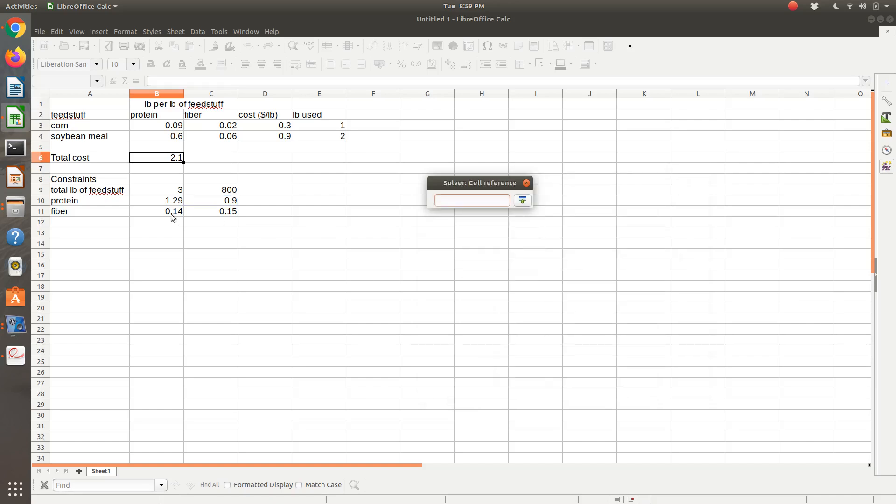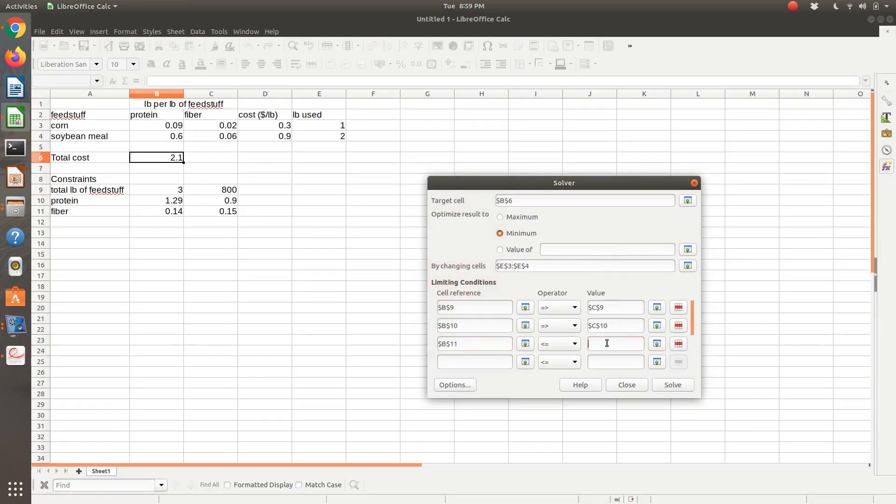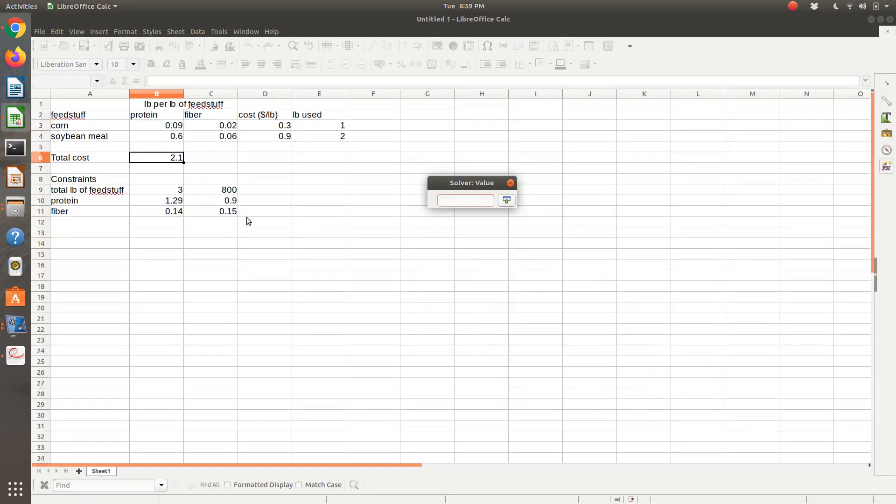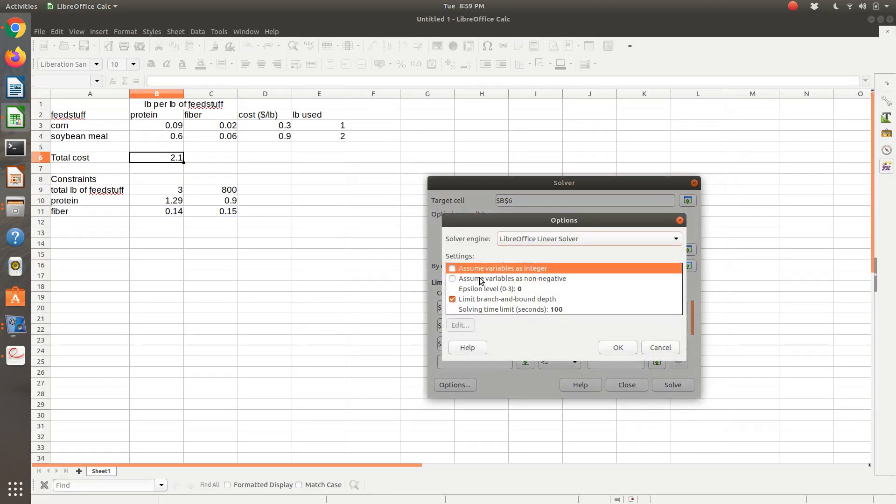And finally, fiber. So left-hand side is less than or equal to right-hand side. And in terms of non-negativity constraint, under options, I'm going to get that by just checking this box, assume variables as non-negative.